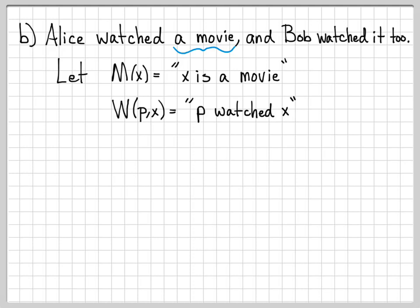So when I say a movie, we know that there are lots of movies, but a movie, that gives us a clue that there exists some movie, some specific one. So the word A gives us a clue that we should use the symbol there exists. And then this word over here, it, is important as well. This tells us that Bob watched the same movie, not another movie, but the exact same movie.